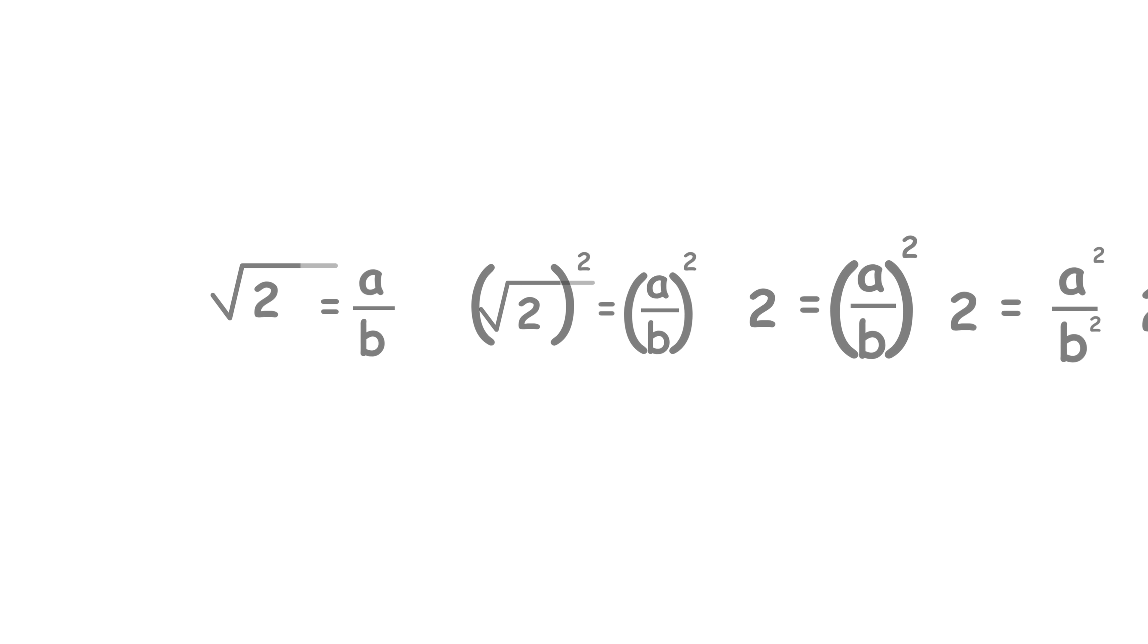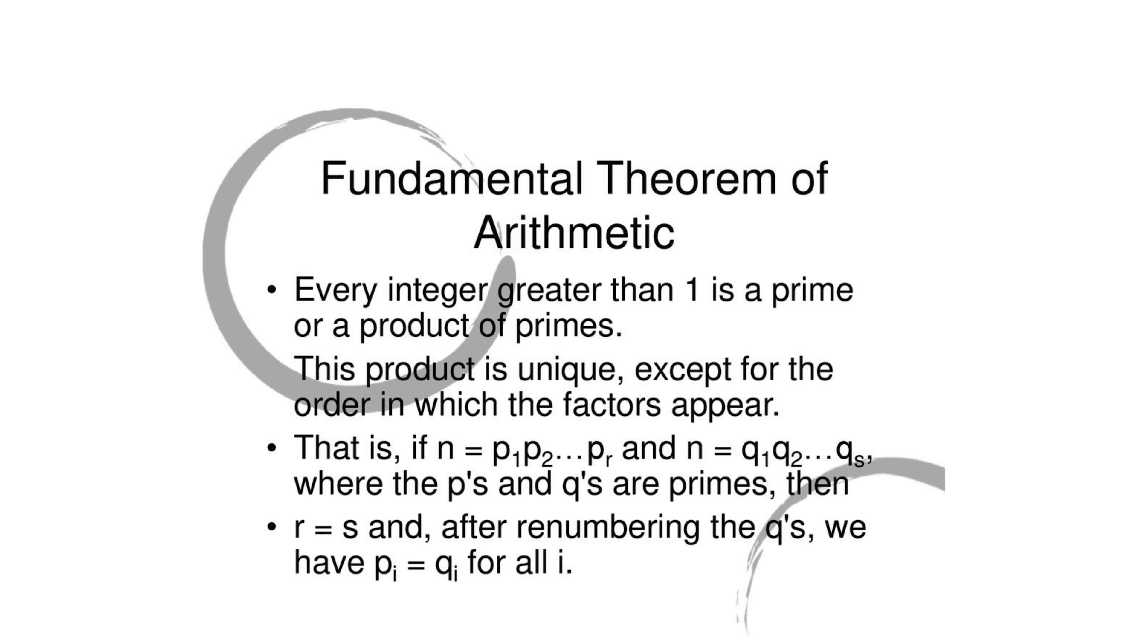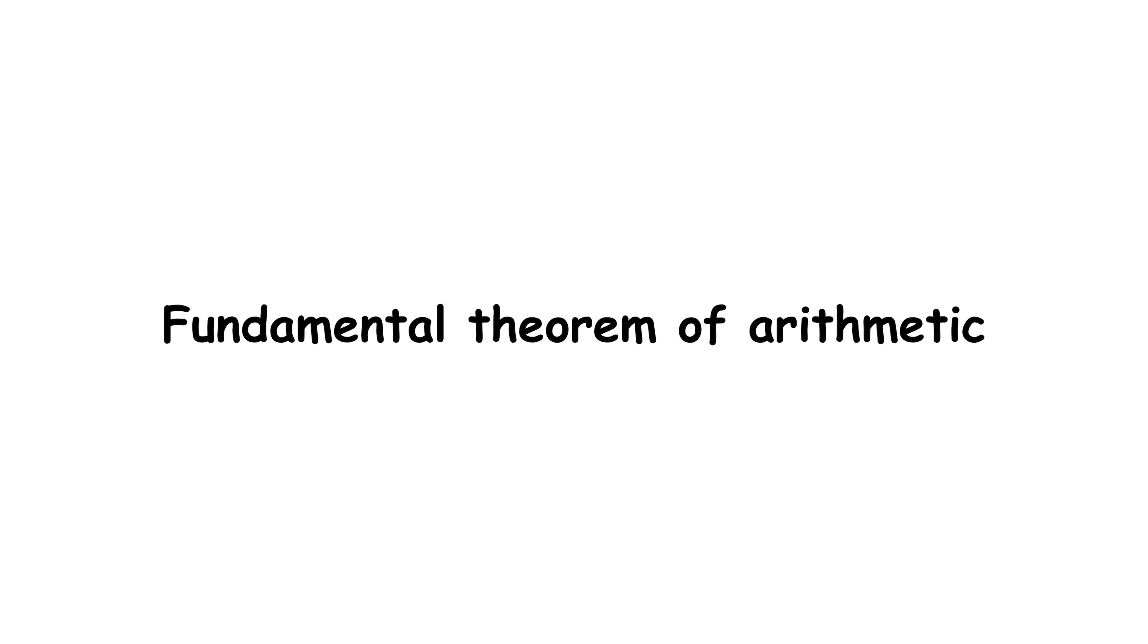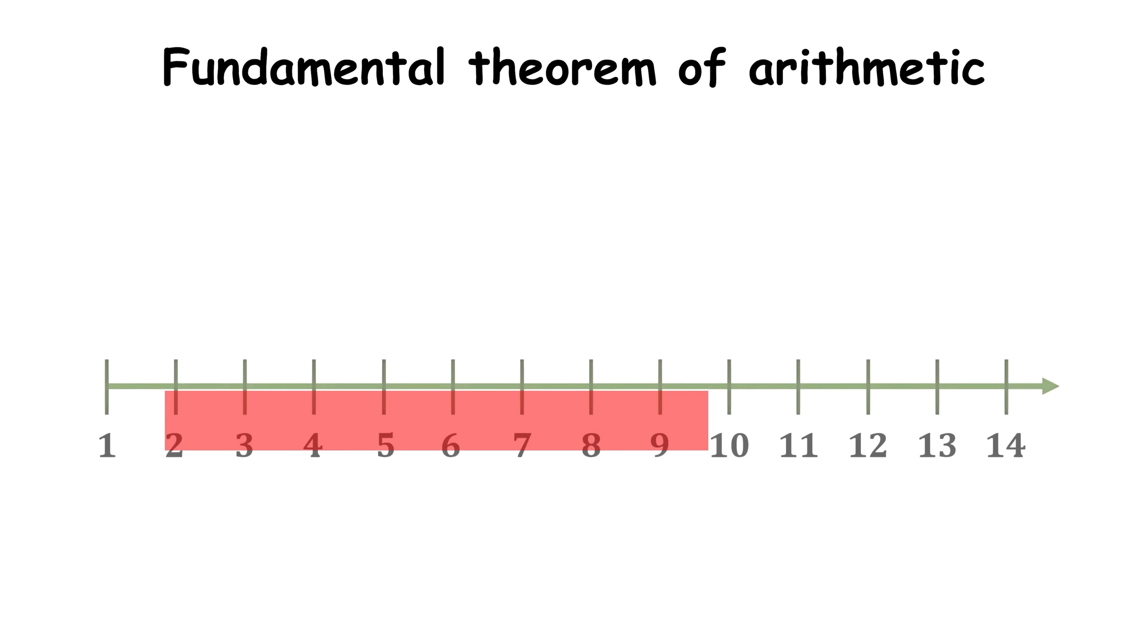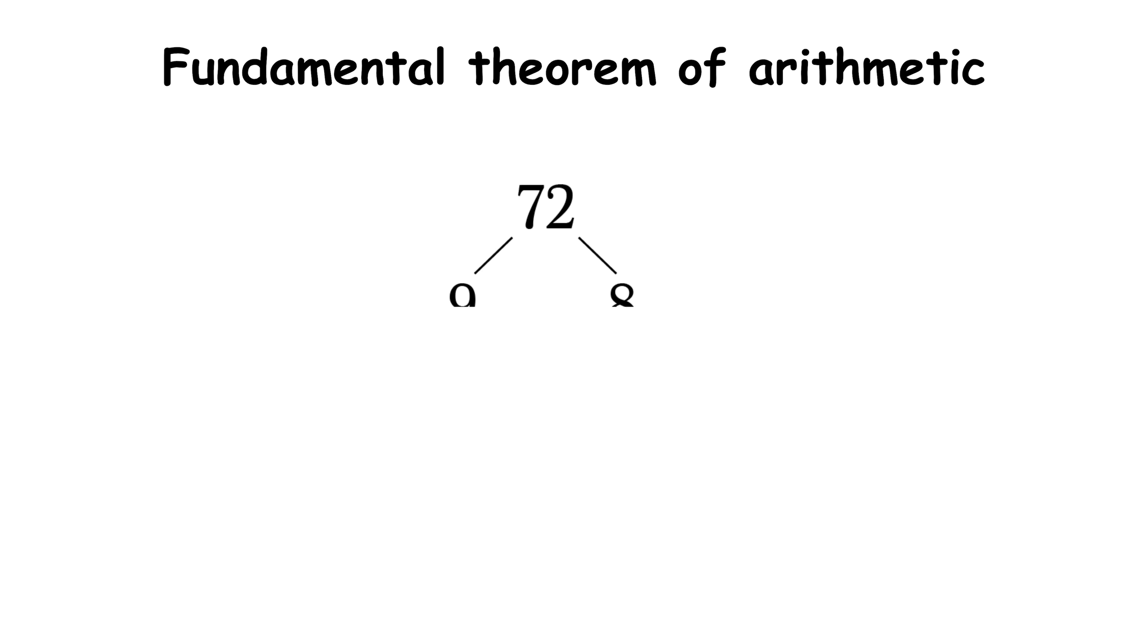Now, for where this proof differs, you may know about the fundamental theorem of arithmetic, if not by name. This theorem states that every natural number greater than 1 can be uniquely written as a product of primes, which is called that number's prime factorization.